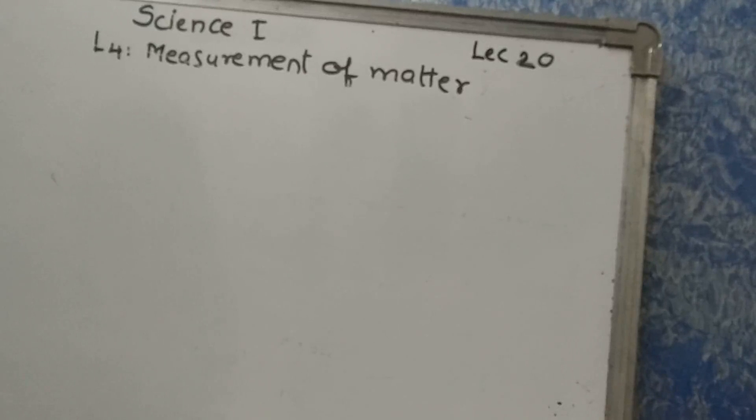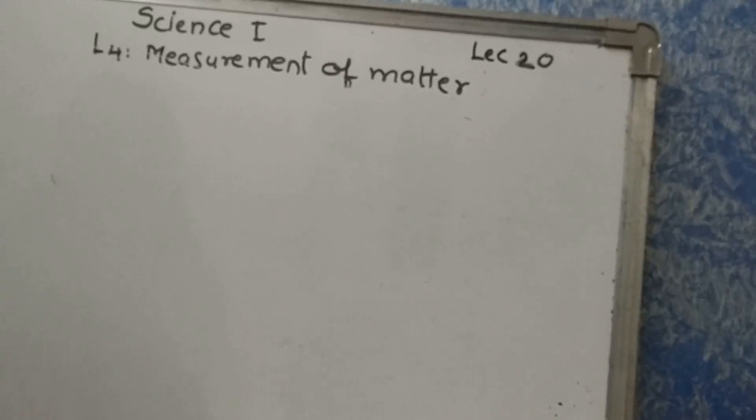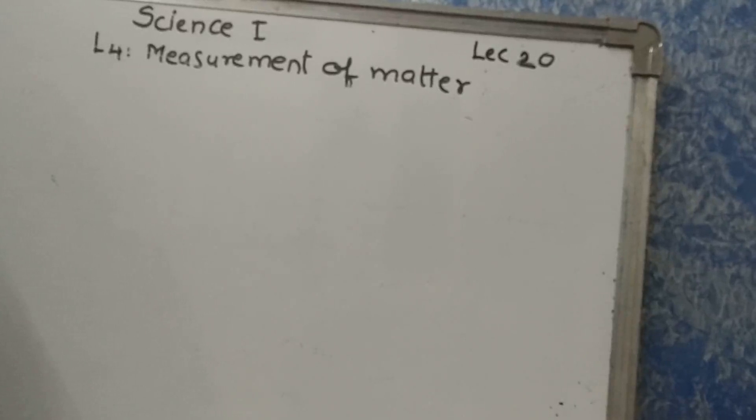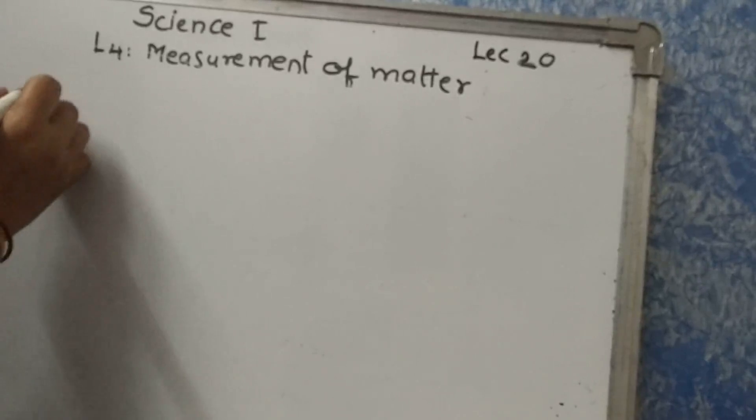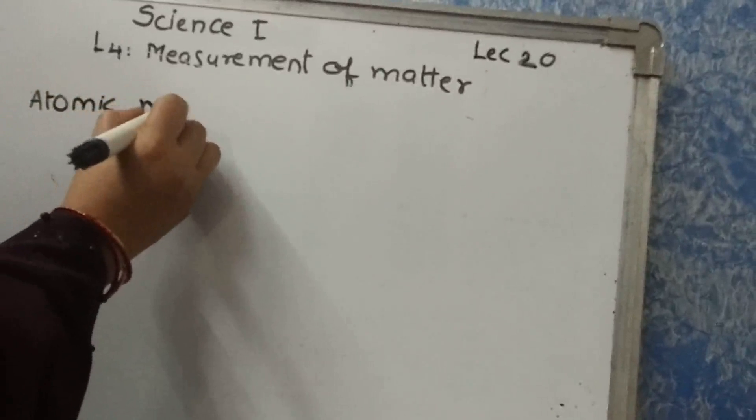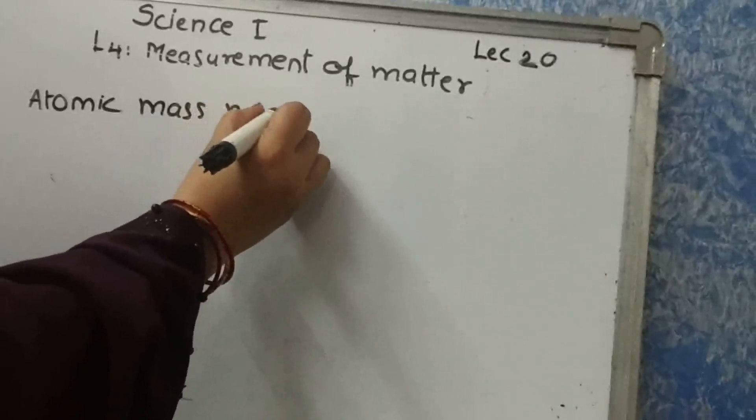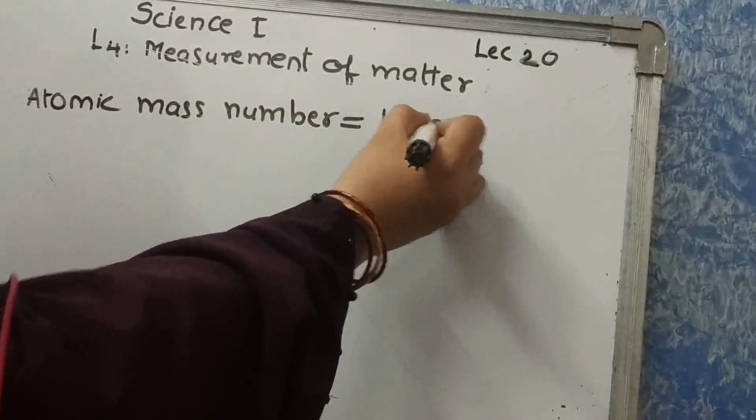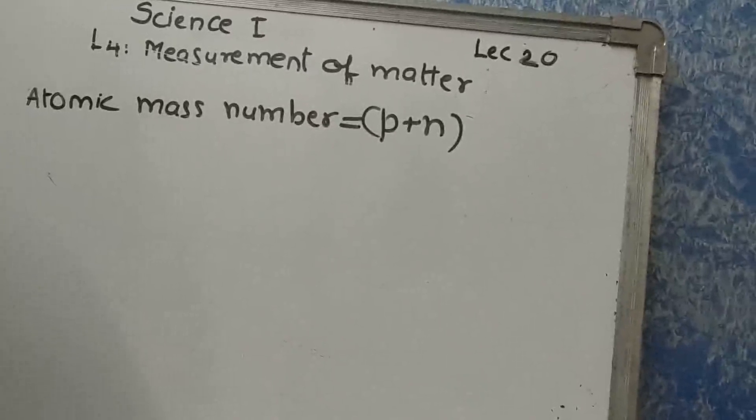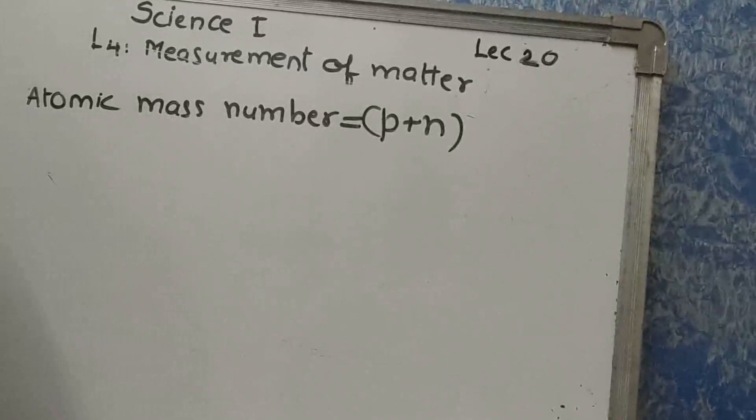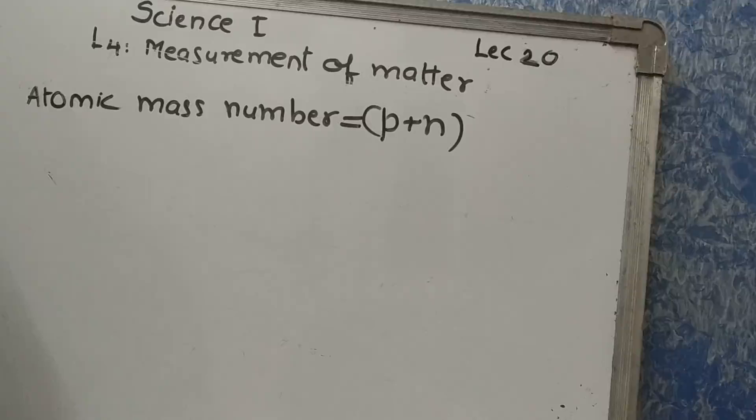Our next topic is the mass of an atom. The mass of an atom is concentrated in its nucleus and it is due to the protons and neutrons in it. The number of protons plus neutrons in the atomic nucleus is called atomic mass number. Atomic mass number equals number of protons plus number of neutrons present in the nucleus of the atom. Protons and neutrons are together called nucleons.